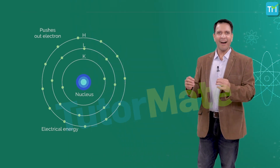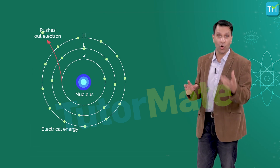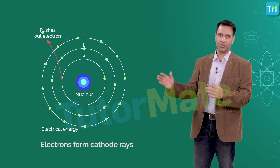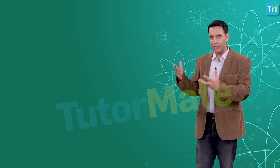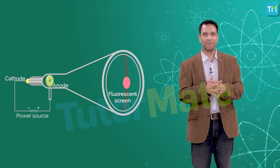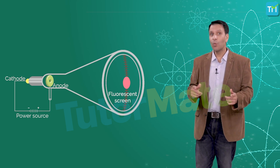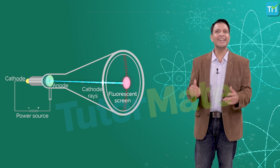When a high electric current is applied inside the cathode ray tube, the electrical energy pushes out some of the electrons from the gas. These fast-moving electrons form cathode rays. Thomson never set out to discover electrons, but stumbled upon this discovery. Back then, what flowed out of the cathode and traveled towards the anode was called a cathode ray, not an electron beam.